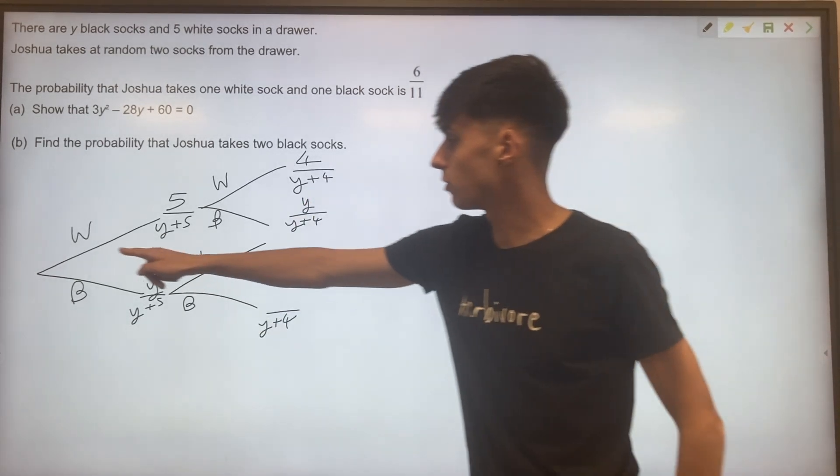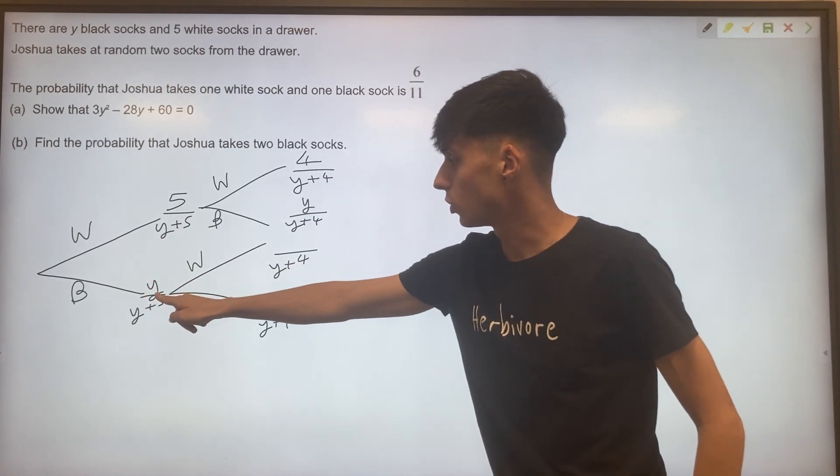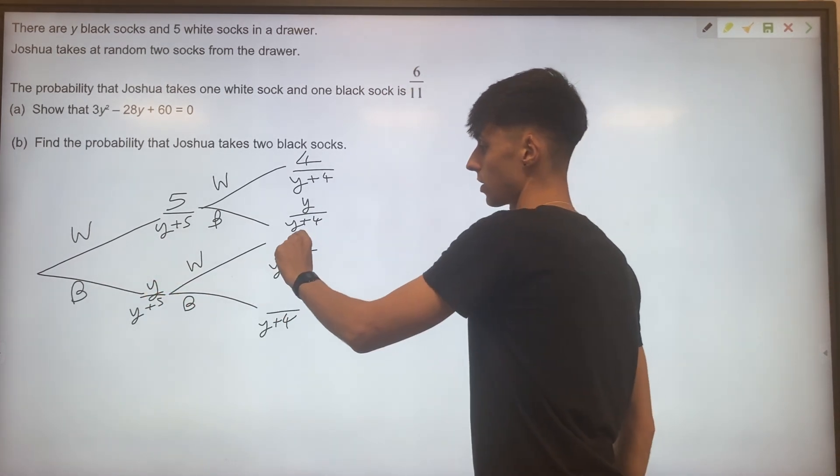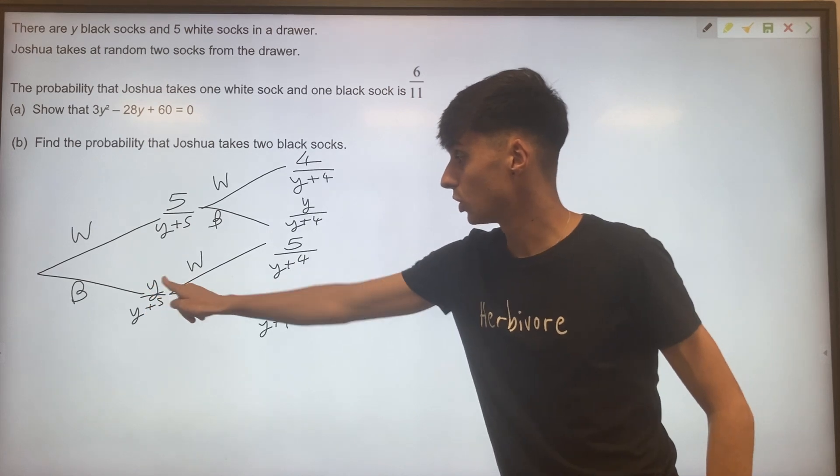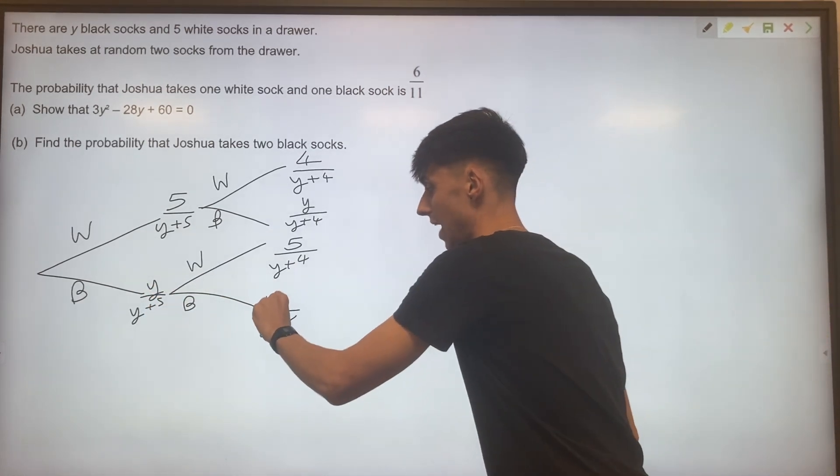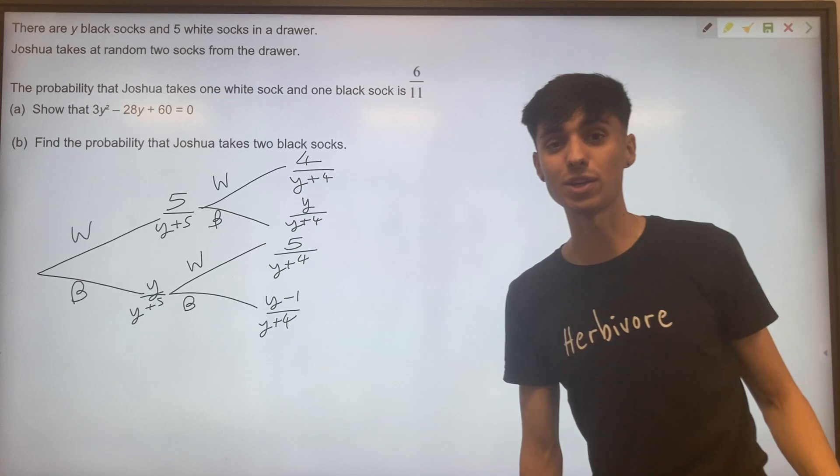Likewise, down here, if you picked a black sock, you haven't affected your five white socks. But if you picked a black sock, you have affected your y black socks. And then now just a y minus one.